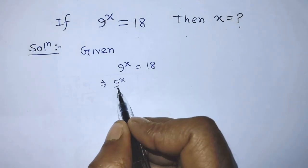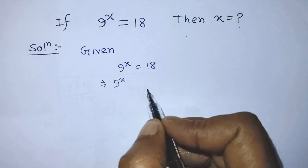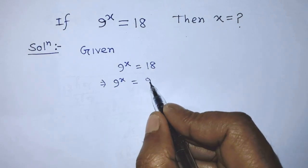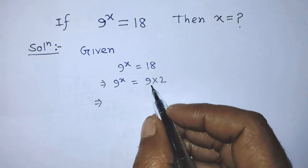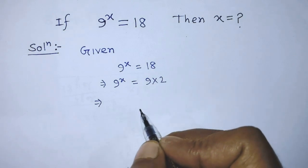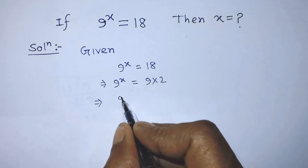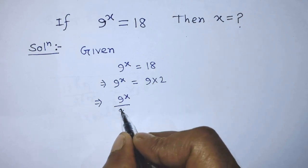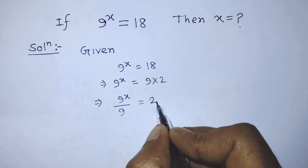We can write 9 to the power x on the left hand side of this equation is equal to 9 times 2 in the place of 18. After that, we have to transpose the digit 9 from right hand side to left hand side. Now we can write on the left hand side 9 to the power x over 9, which equals 2 on the right hand side.